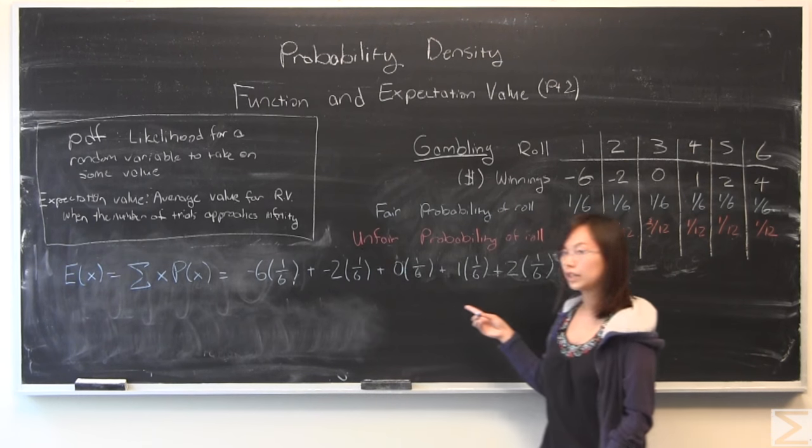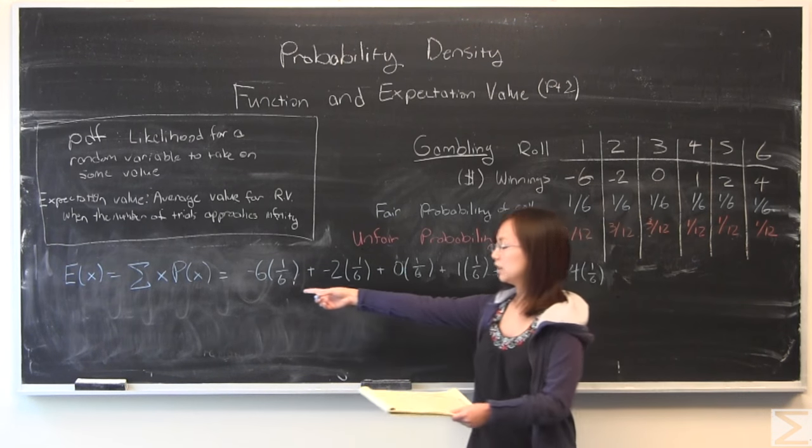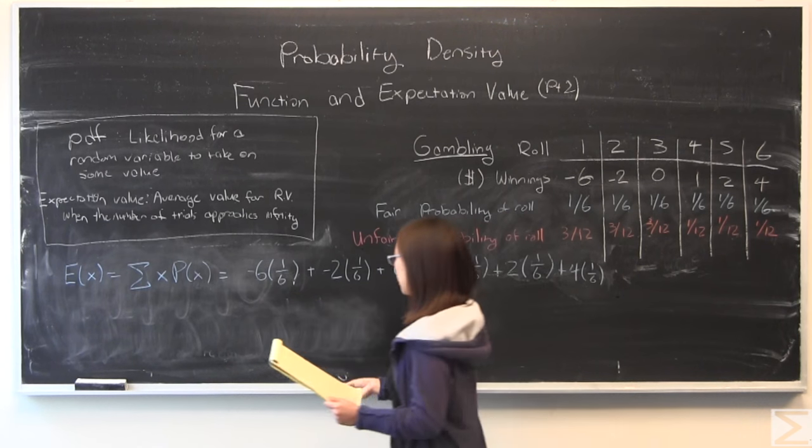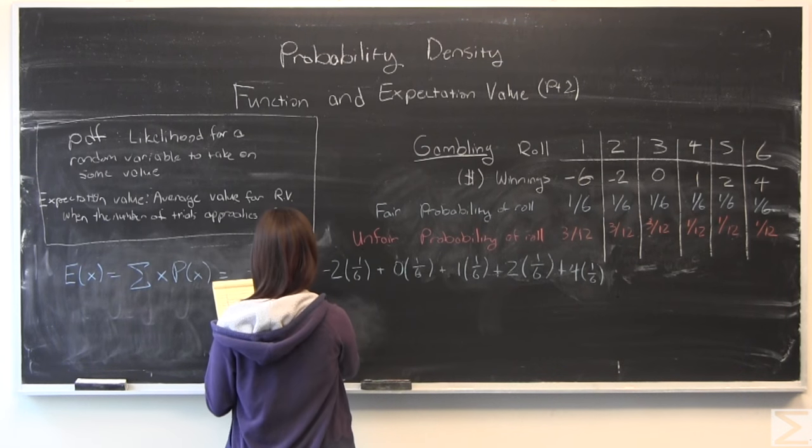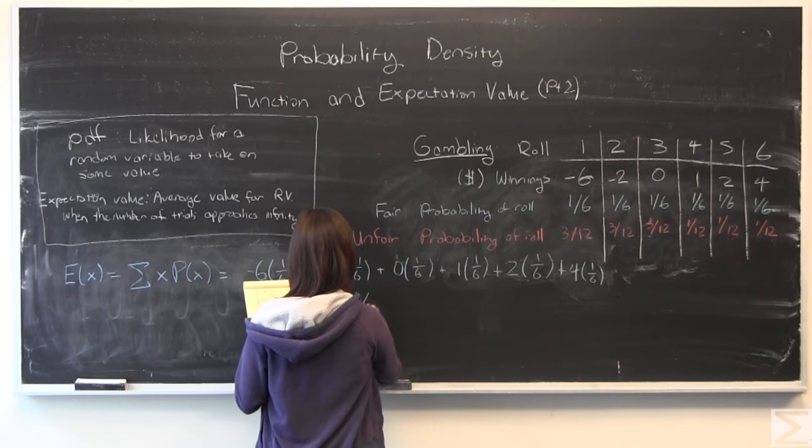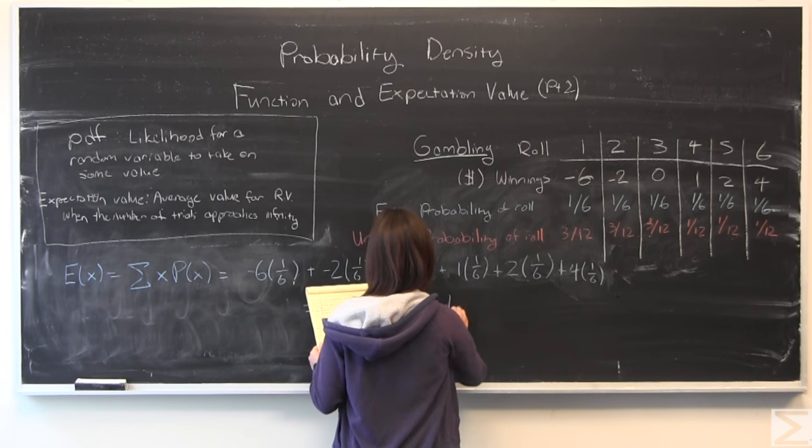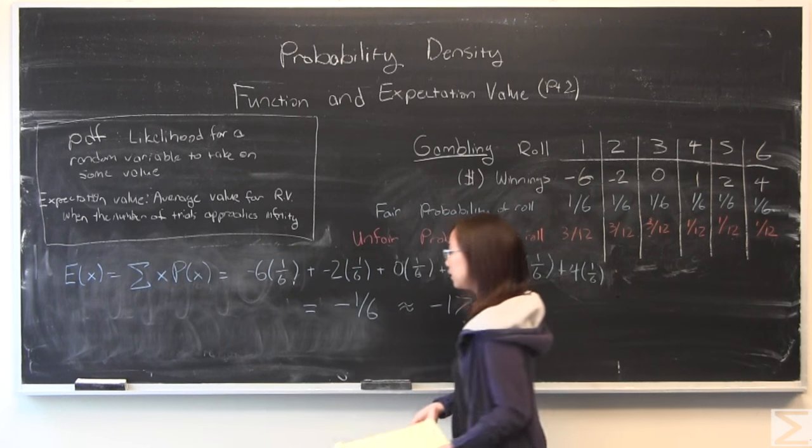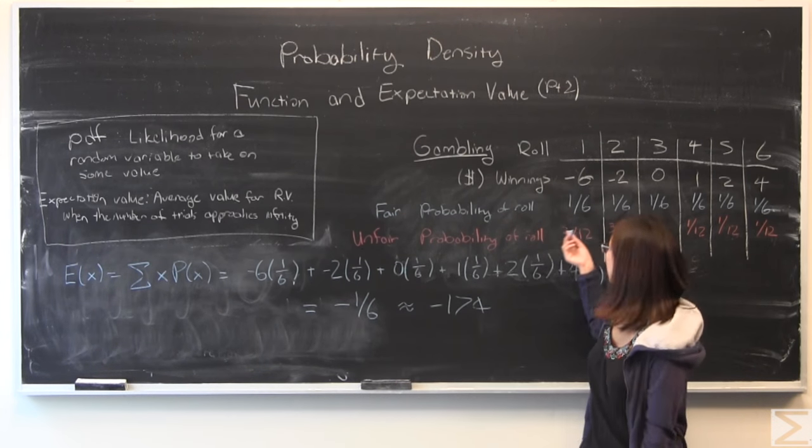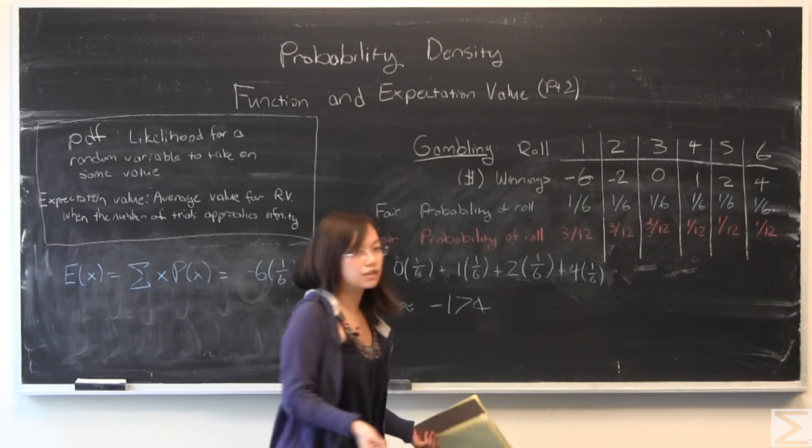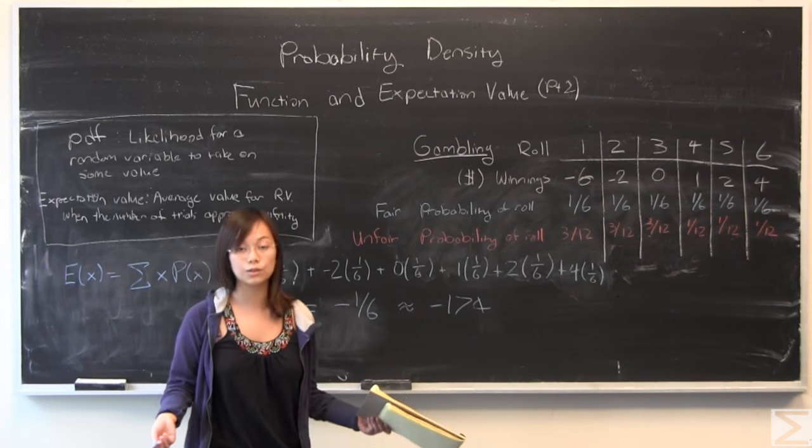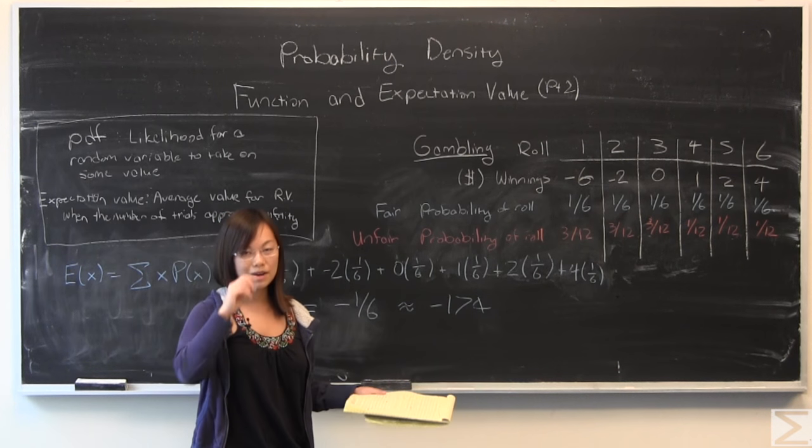As you can see here, I've taken all six possible values, see what you earned, what probability it is. If you add all of this up, you get negative 1/6, and this is approximately negative 17 cents. So if you were to play this game with a fair die, it is slightly weighted against your favor, so you would be expected to lose 17 cents by playing this game.